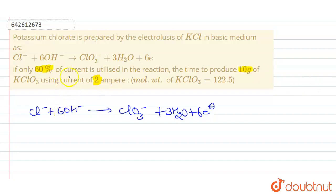So if 60 percent of current is only utilized in this reaction, what we have: the current given is 2 ampere. We are producing 10 gram of KClO3 using 2 ampere, but for this reaction, for the electrolysis of KCl, we require only 60 percent of this 2 ampere current.